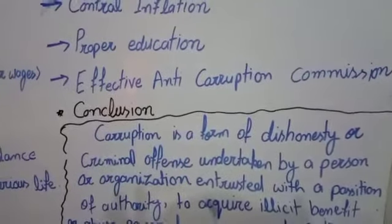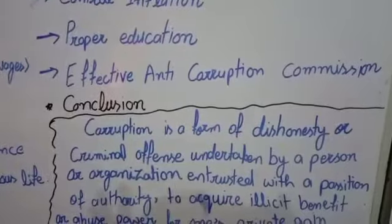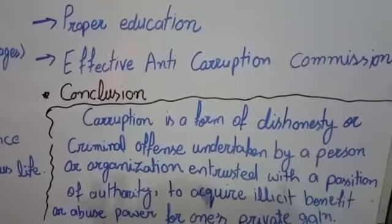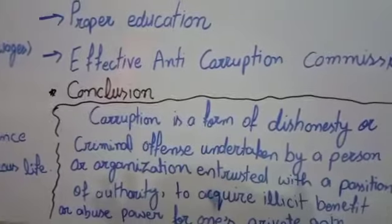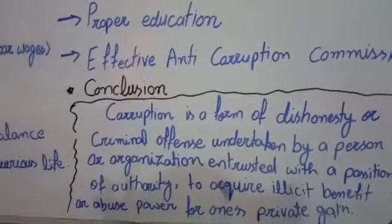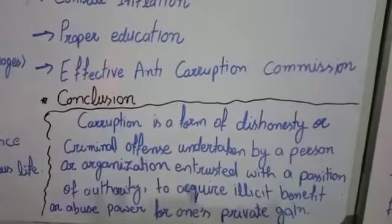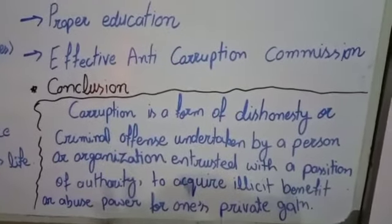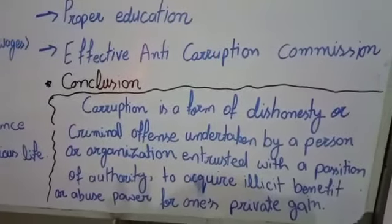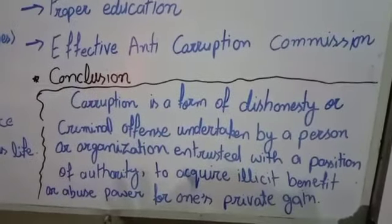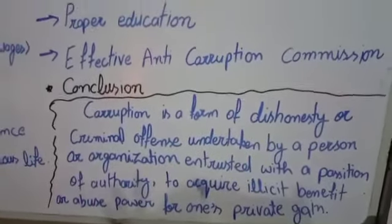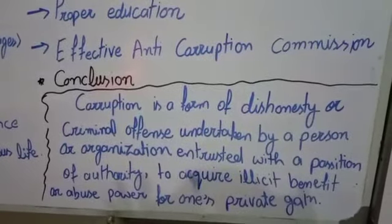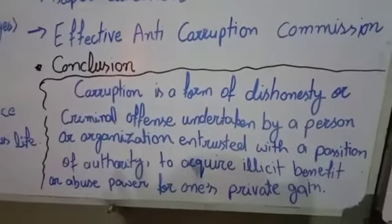Lack of proper education بھی ایک بڑی وجہ ہے — لوگوں میں تعلیم کا فقدان ہے، لوگوں کو moral education نہیں دی جاتی، انہیں ان کی ذمہ داریوں سے آگاہ نہیں کیا جاتا، جس کے نتیجے میں corruption جنم لیتی ہے۔ اس کے علاوہ ایک effective anti-corruption commission کا قیام ضروری ہے — اگر ہم ایک ایسا ادارہ بنا لیں جو proper check and balance رکھے تو corruption کافی حد تک کم ہو کر ختم ہو سکتی ہے۔